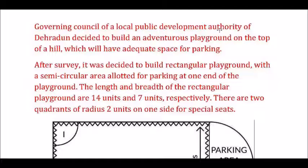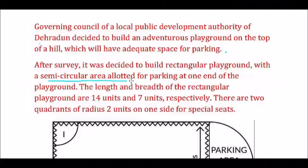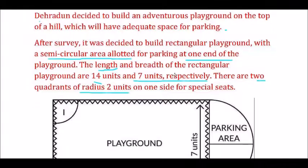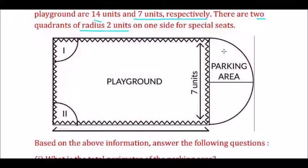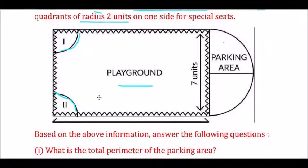Dear students, the governing council of a local public development authority of Radoon decided to build an adventurous playground on the top of a hill with adequate space for parking. After a survey, it was decided to build a rectangular playground with a semi-circular area allotted for parking at one end. The length and breadth of the rectangular playground are 14 units and 7 units respectively, with two quadrants of radius 2 units on one side of the parking area.